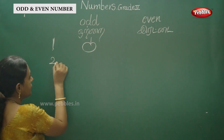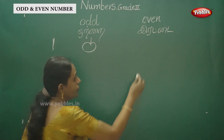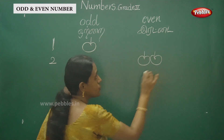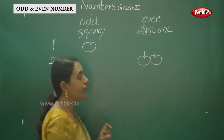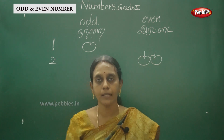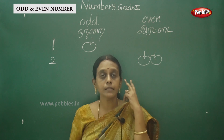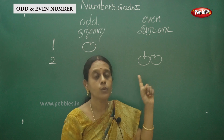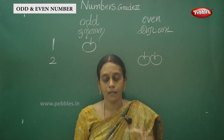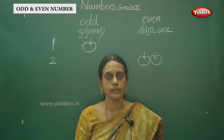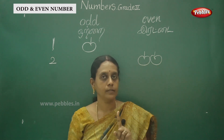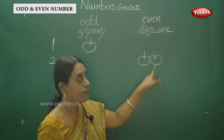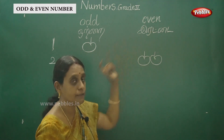Two — a pair. Two forms a pair. This one is odd number, this one is even number. And three.